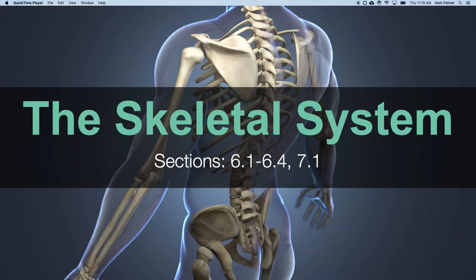We are moving into the skeletal system, and today we're talking about bone, which is familiar. You've seen bone already. In lab one you looked at slides of bone tissue and learned the parts of compact bone. We're going to review that mainly today because that leads into the skeleton. Bone is the tissue of the skeleton, how the skeleton is set up, and how it interfaces with muscle to produce movements.